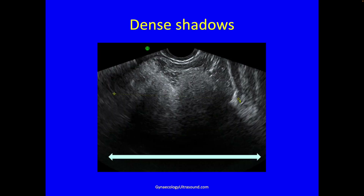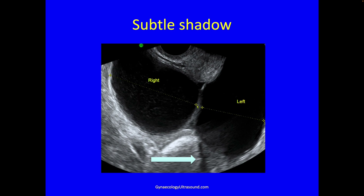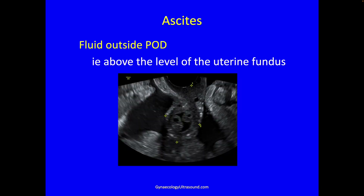Shadowing behind the mass is something we actively have to look for, and it can be dense shadowing as in this example or it can be rather fine, so look carefully. Ascites is defined as fluid outside of the pouch of Douglas, i.e. above the level of the uterine fundus as in this example — ascites.